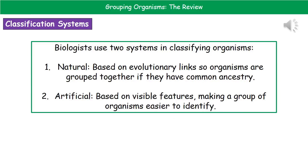Biologists can use one of two systems when classifying organisms. The first is the natural system, which is based on evolutionary links, meaning organisms are grouped together if they've got a common ancestor. The second is the artificial system, which is based on visible features and makes a group of organisms easier to identify.